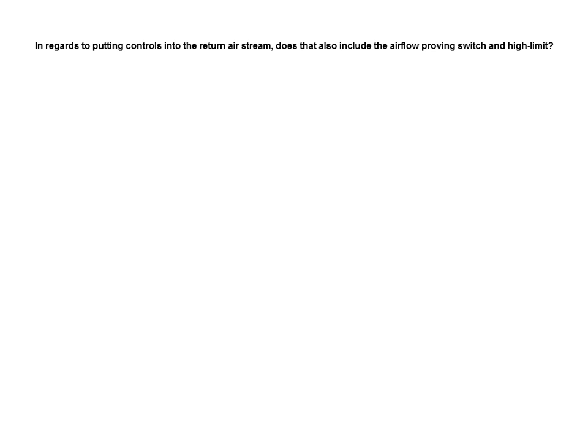Question: When putting controls in the return air stream, does that include the airflow-proving switch and high limit? No — the airflow switch should be just before your steam dispersion grid to confirm airflow is passing over it. The high limit should be, as a rule of thumb, about three times your absorption distance downstream. So if you have a two-foot absorption distance, place it six feet from the steam dispersion grid. The high limit ensures that right after steam is introduced, you don't condense on duct walls — it keeps RH below 80–85%. It's only the room control or main control that goes in the return air stream.